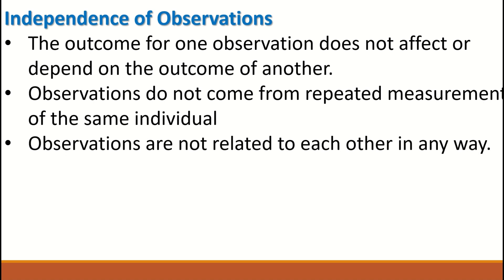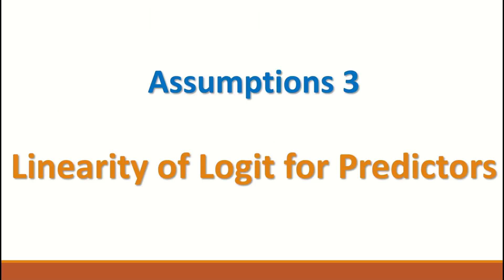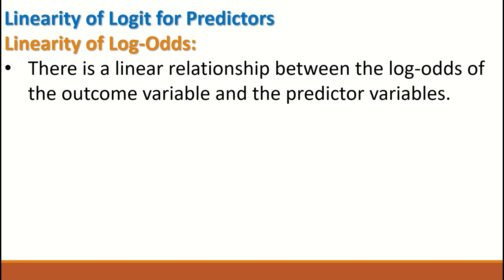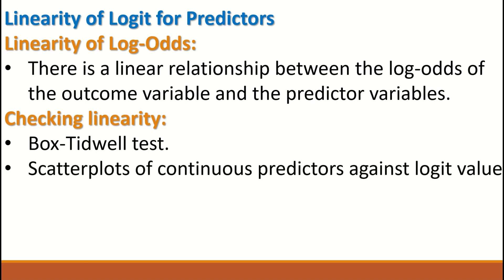The third assumption is linearity of the log odds for predictors. This means that there is a linear relationship between the log odds of the outcome variable and the predictor variables. How can we check linearity? By doing the Box-Tidwell test, by drawing scatter plots of continuous predictors against logit values.